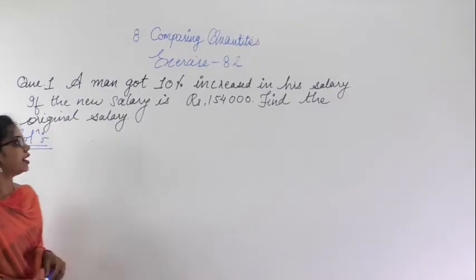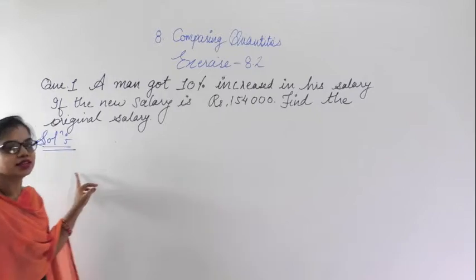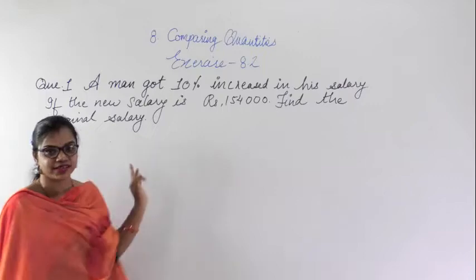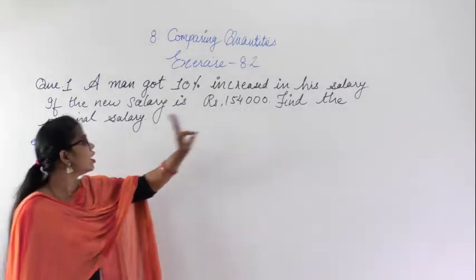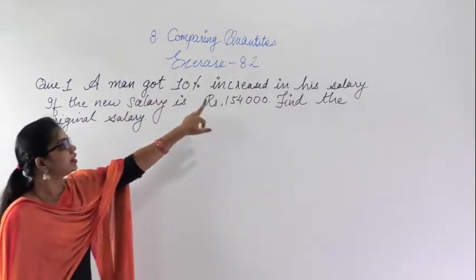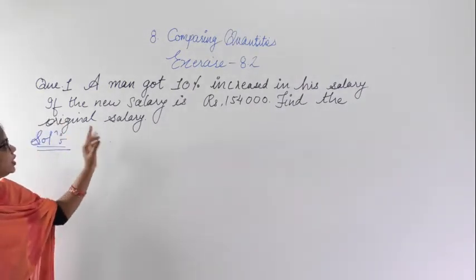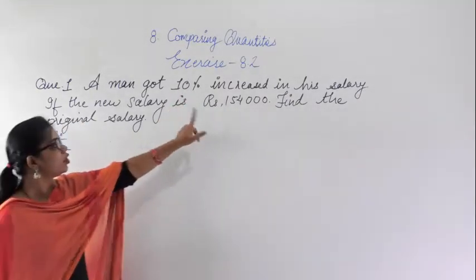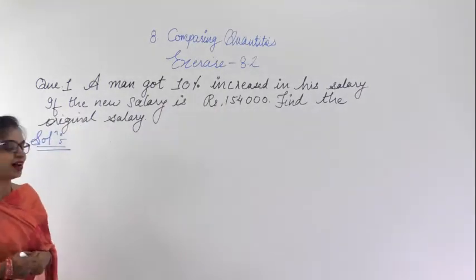Today we are starting exercise 8.2 of chapter 8, comparing quantities. The first question says that a man got a 10% increase in his salary. If the new salary is Rs 1,40,000, find the original salary. The original salary is not given, but he got a 10% increase and the new salary is given. You have to find out the original salary.